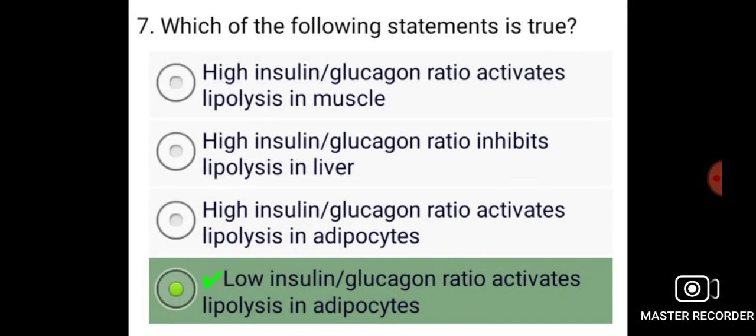Which of the following statements is true? Low insulin to glucagon ratio activates lipolysis in adipocytes.